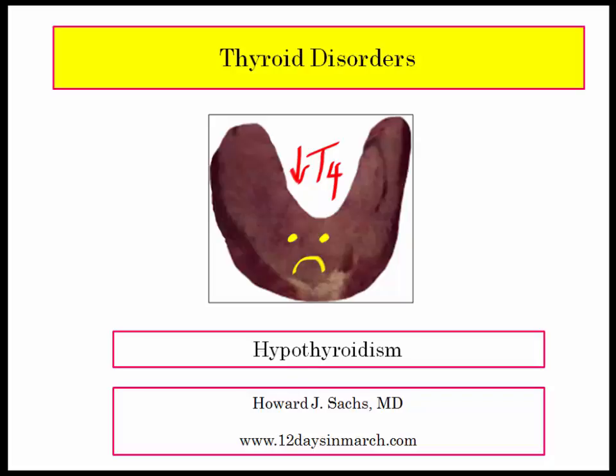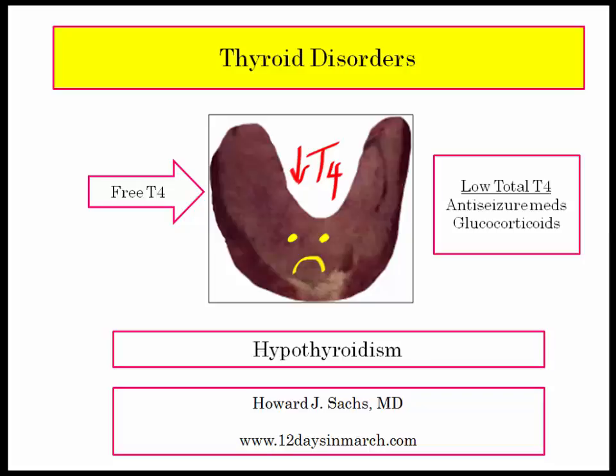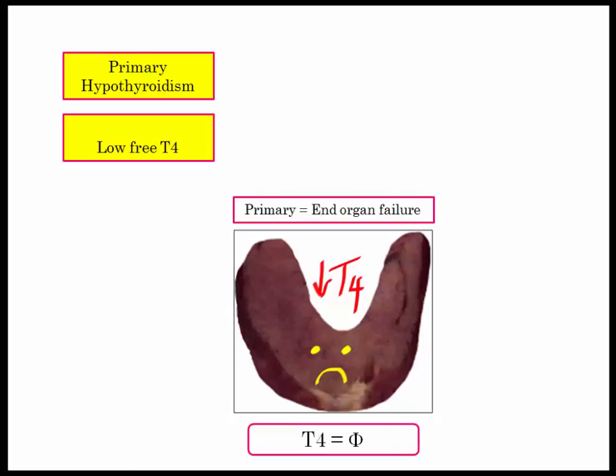Welcome back to 12 Days in March. In this section, we will continue our discussion of thyroid disorders, turning our attention to hypothyroidism. In terms of definitions, we are talking about free T4. We can have a low total T4 if there is a decrease in TBG. Typical situations with a low TBG include use of anti-seizure medications and glucocorticoids. We will begin our review of hypothyroidism by focusing on the primary disorders.